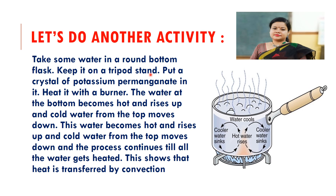Activity: take some water in a round-bottom flask, place it on a tripod stand, and put a crystal of potassium permanganate so we can see the convection current — it is a colored compound that forms a color fountain. Heat it with a burner. The water at the bottom becomes hot and rises up, cold water from the top moves down, becomes hot and rises up again, and this process continues until all the water is heated. Hot water rises up, cooler water sinks — this continues until the entire water temperature becomes equal.